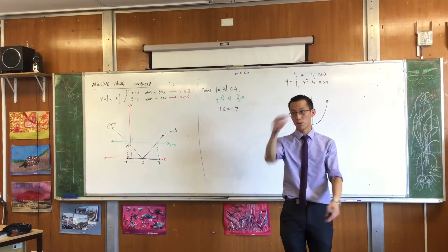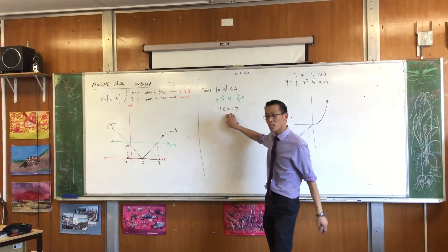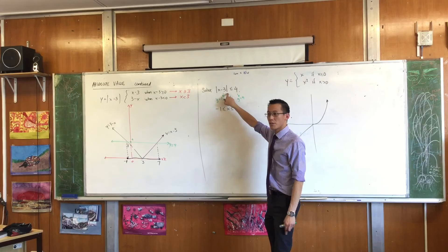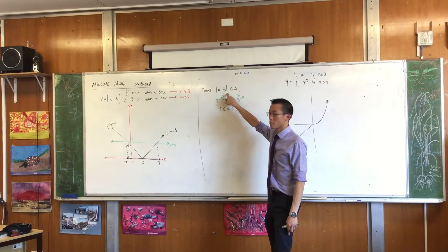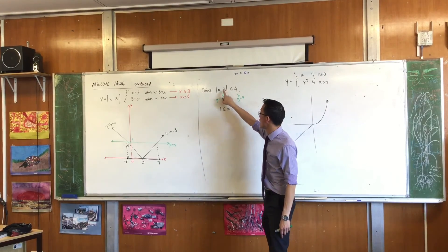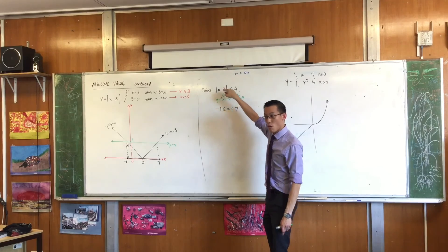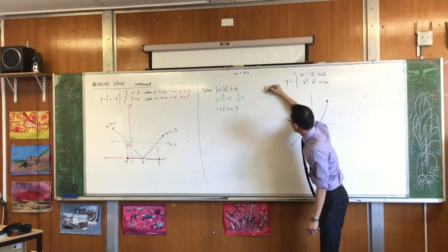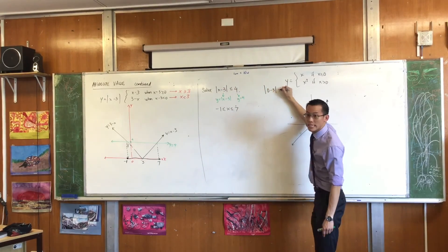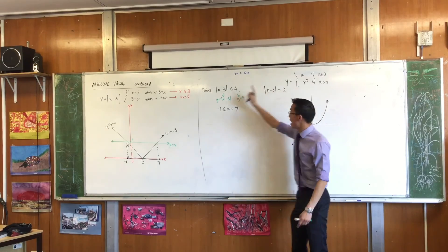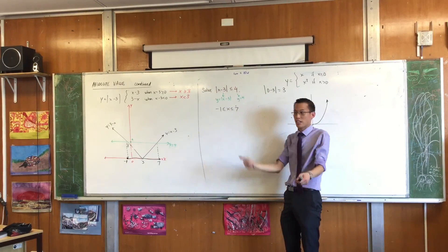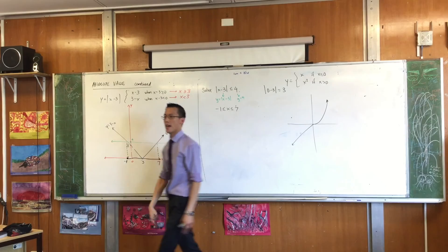And of course you can go ahead and you can put some numbers in. Put in x equals 0. Will that be true of this? It will, right? Because the absolute value of 0 minus 3, the absolute value of 0 minus 3 of course is 3, and that sure enough is less than or equal to 4. It checks out. And you can check any value in there and it will be fine.